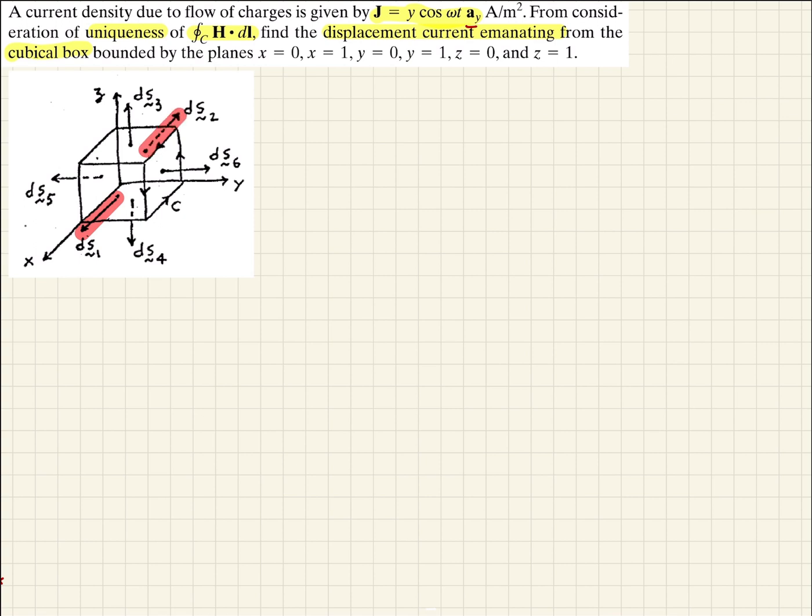Same thing with this vector here, 0. And actually, all four of these are all going to be 0 because of their direction. They're not in the y direction. So we shouldn't see any current density flow in those areas.